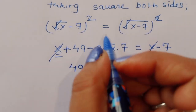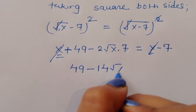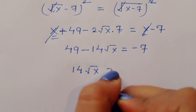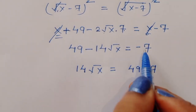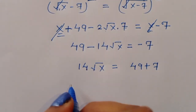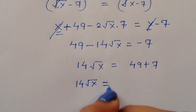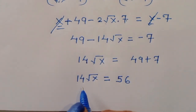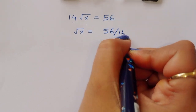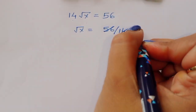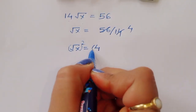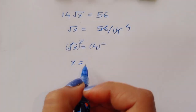Cancelling x from both sides, we get 49 minus 14 square root of x equals minus 7. Rearranging: 14 square root of x equals 49 plus 7, which equals 56. Therefore square root of x equals 56 divided by 14, which equals 4.